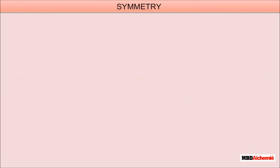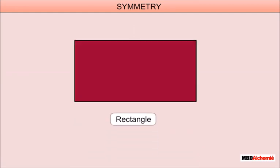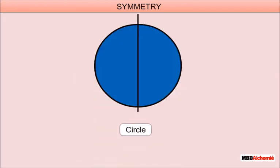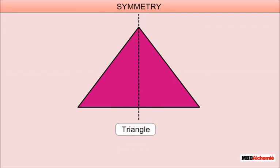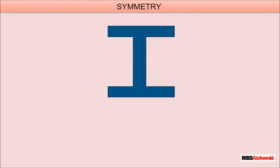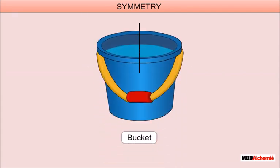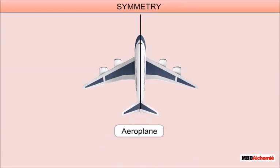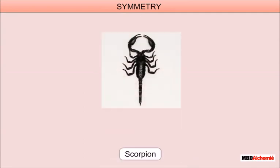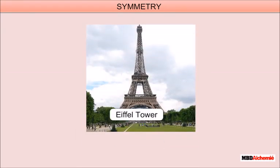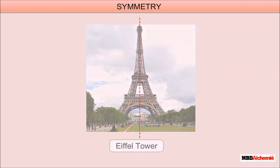Things which can be divided into two equal halves include: rectangle, circle, triangle, English letter I, English letter C, bucket, aeroplane, scorpion, spider, Eiffel Tower, and scissors.